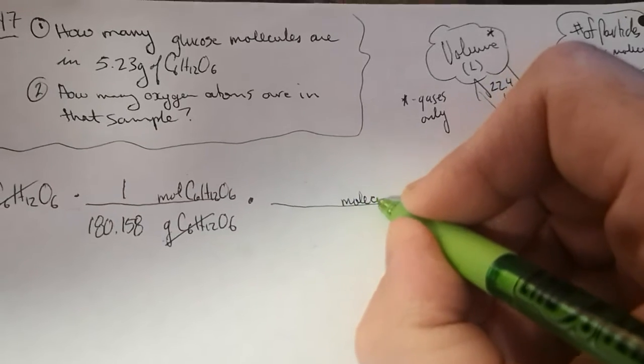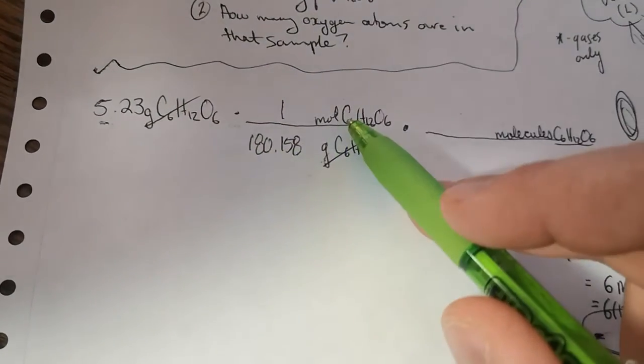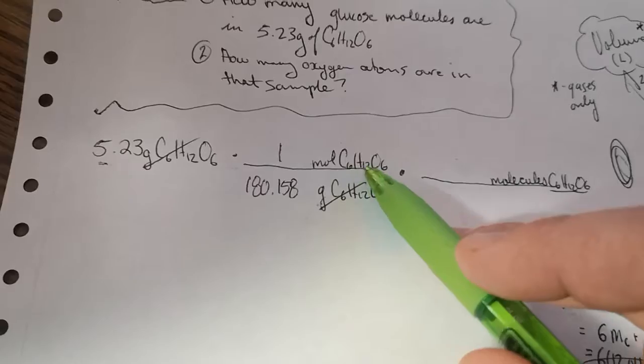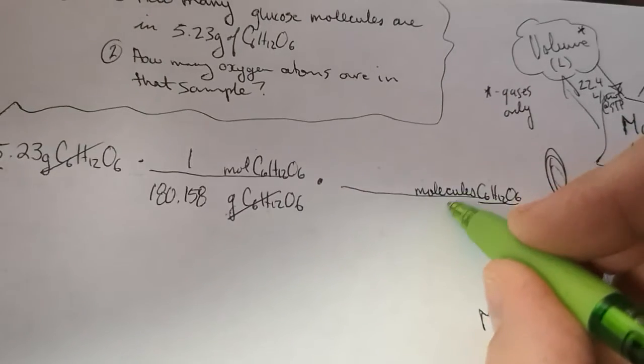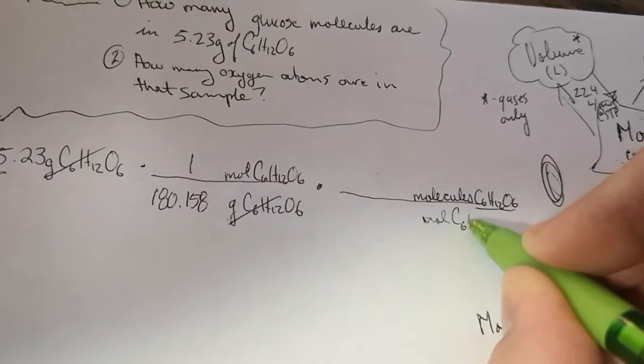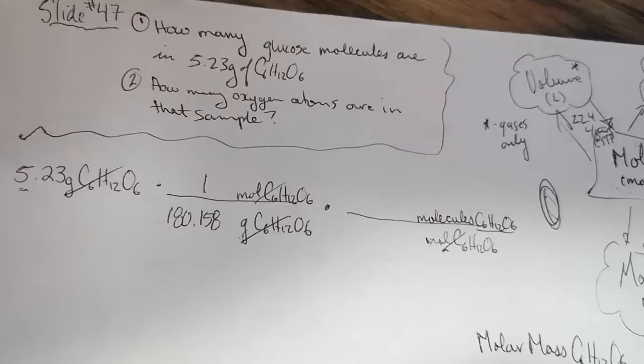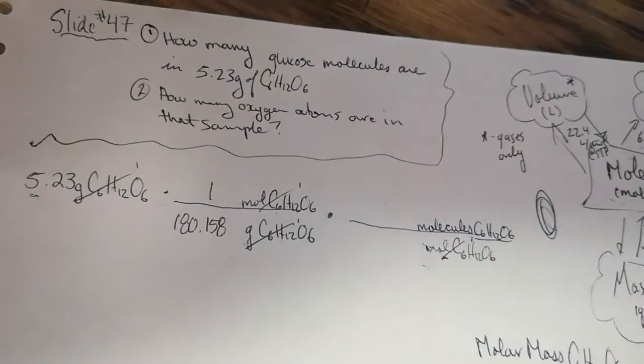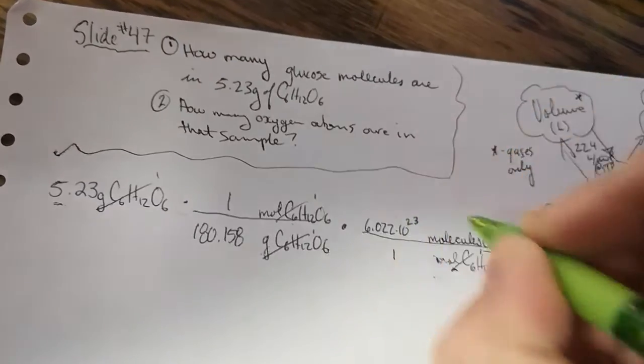If molecules is what we want, after this calculation, what unit are we at? Moles of C6H12O6, it says right here. It's the only unit that didn't cancel. So if that's the unit we're currently expressing after the first step, and we're solving for molecules in our second step, we've got to get rid of moles of C6H12O6. Once these units are on opposite sides of our fractions, we can cancel those out. One mole is always equal to 6.022 times 10 to the 23 particles.